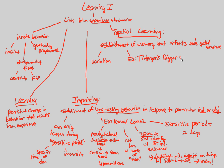Tinbergen's digger wasps are insects whose behavior exemplifies spatial learning. Tinbergen noticed that females make nests underground. Why underground? Think of evolutionary, ultimate causes — underground there are fewer predators, less chance of dying, so it makes sense to make nests underground for successful survival and reproduction. But the females don't spend their whole lives there — they have to go away to hunt for food.